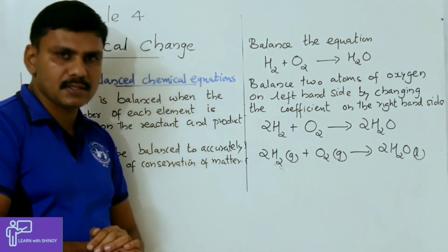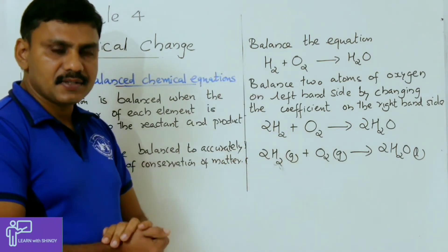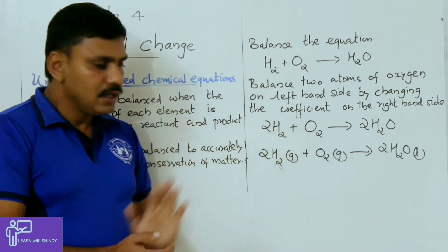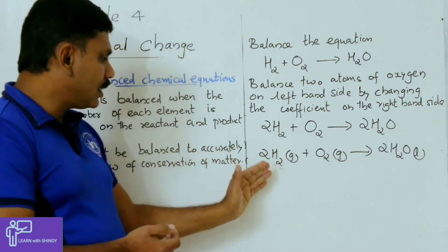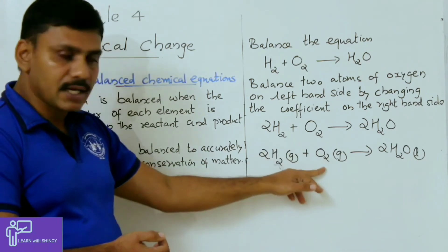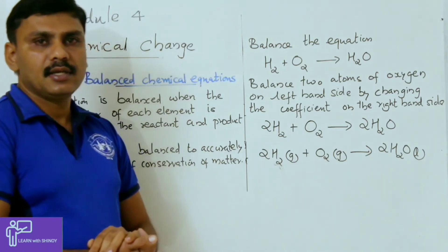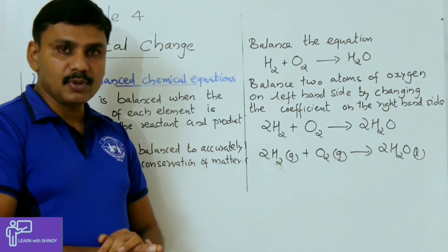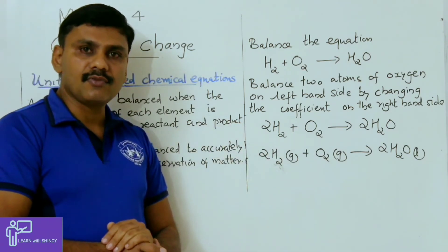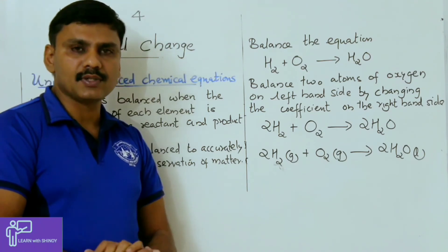The number of elements — hydrogen and oxygen — on both sides are now the same, so this equation is balanced. If you take the masses of the hydrogen atoms and oxygen atoms on the left side and right side, both answers will be the same. That means it obeys the law of conservation of mass. For a balanced equation, it always obeys the law of conservation of mass.